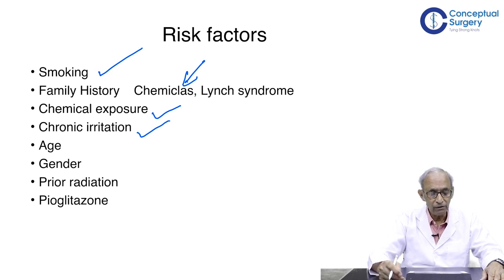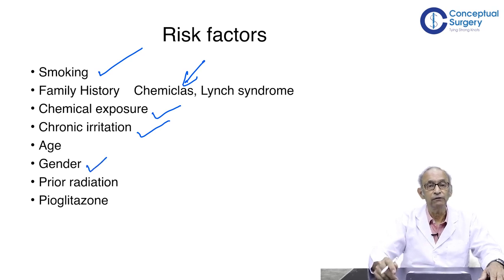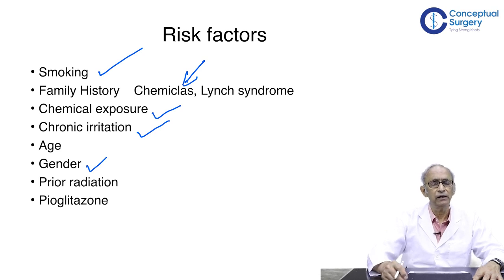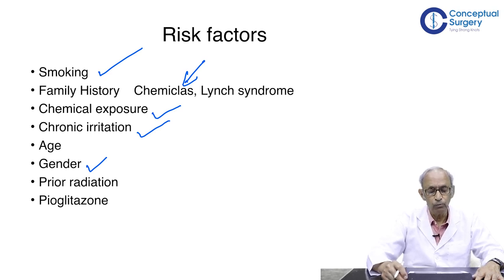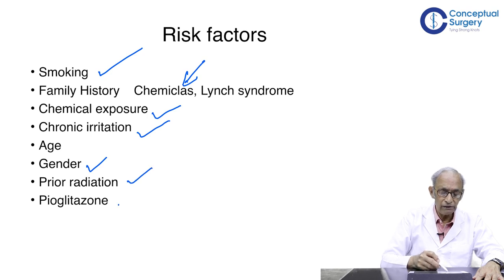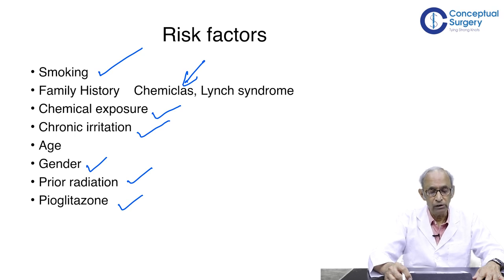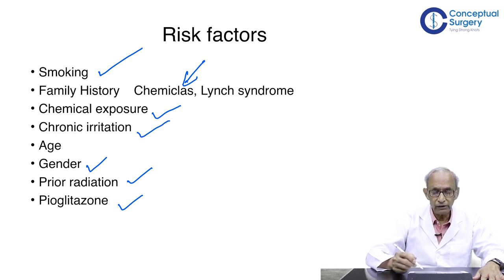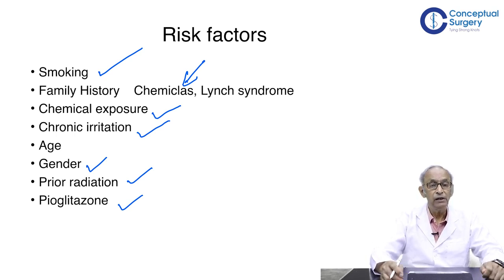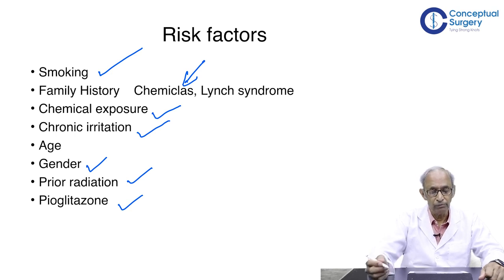Age is a factor: men beyond the age of 70 are more prone to carcinoma of the bladder. Gender also plays a role, as it occurs more often in men than in women. Prior radiation given to the lower abdomen or pelvis — for any type of cancer — makes the bladder prone to cancer formation. Anti-diabetic drugs, particularly pioglitazone, have also been identified as a risk factor for bladder carcinoma.